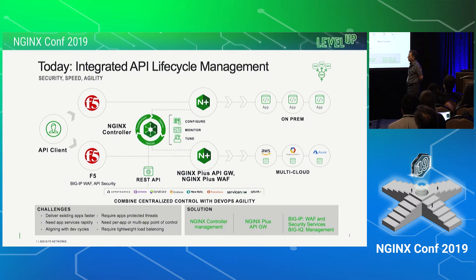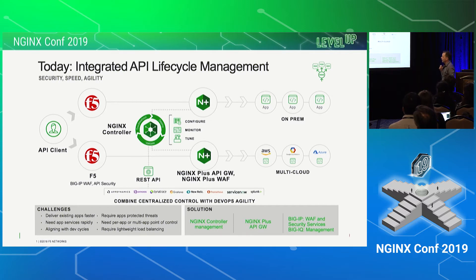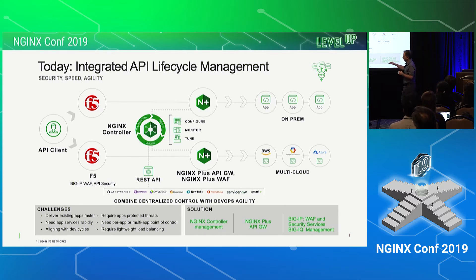With F5, when traffic comes in, the very first thing to handle that API call is going to be an F5 piece of tech, allowing you to do geodistribution via GSLB — making regional-based decisions based on DNS — and then high-security, high-volume WAF. F5 also has a specific API security solution that can ingest Swagger policies and Open API profiles, providing front-door level security: is this API endpoint even allowed? Is it coming from the right location? Does the JSON payload meet the right criteria? All that evaluation happens very fast at the front door.